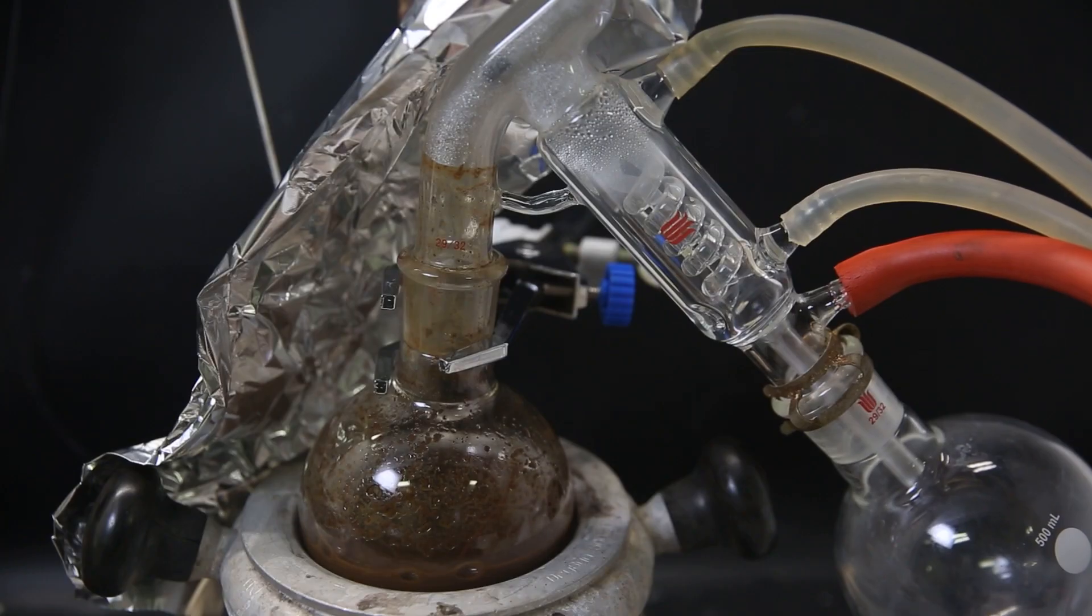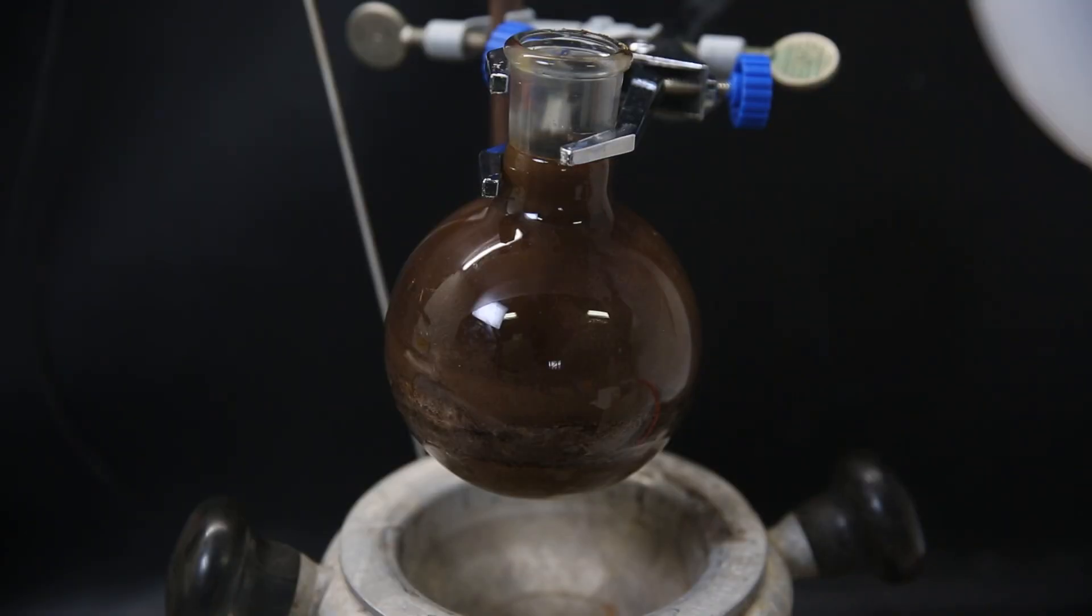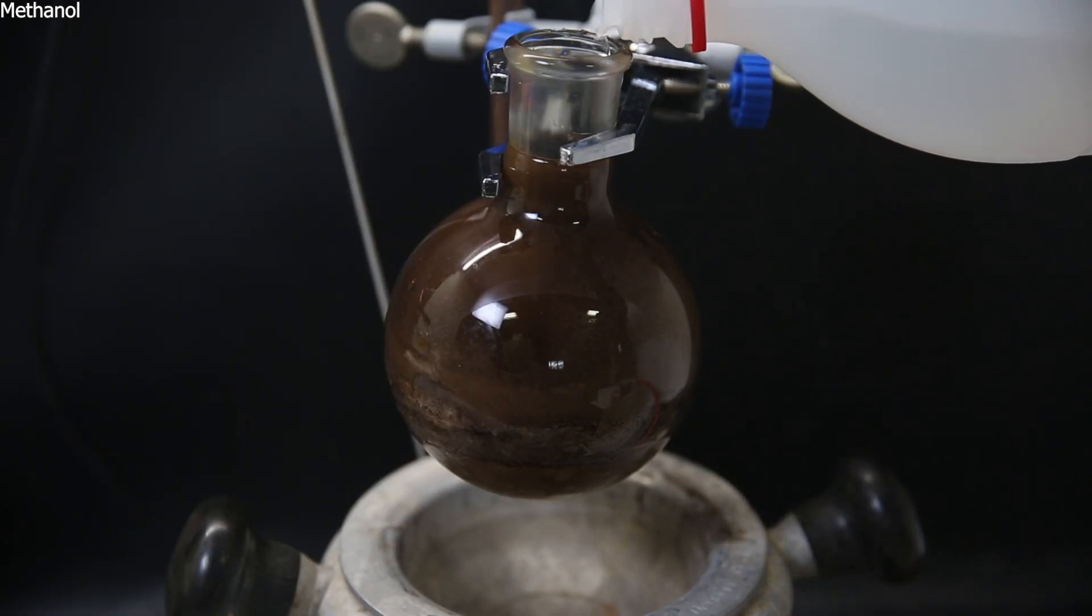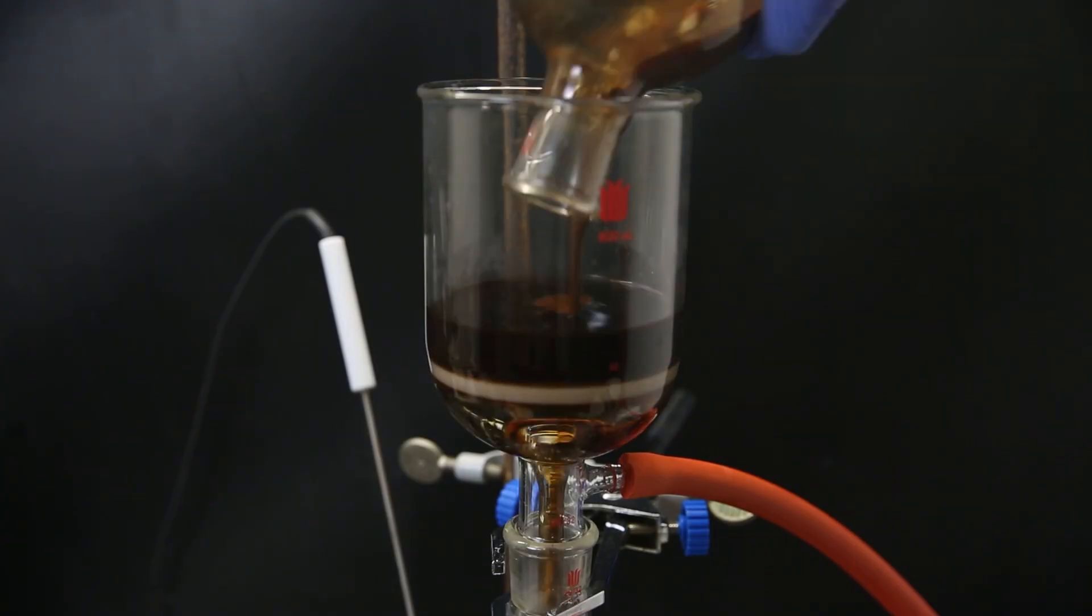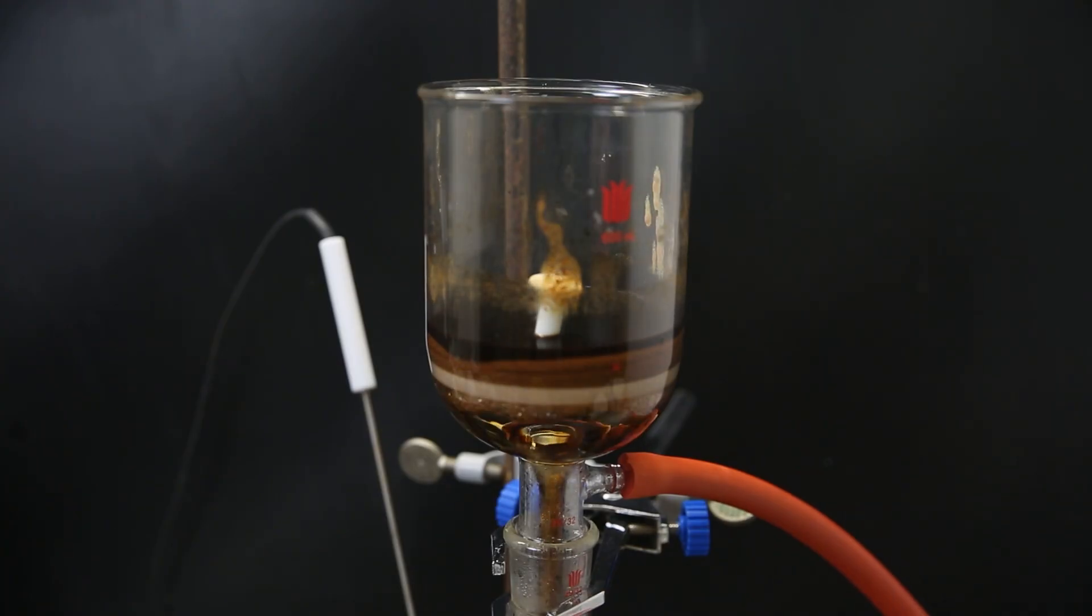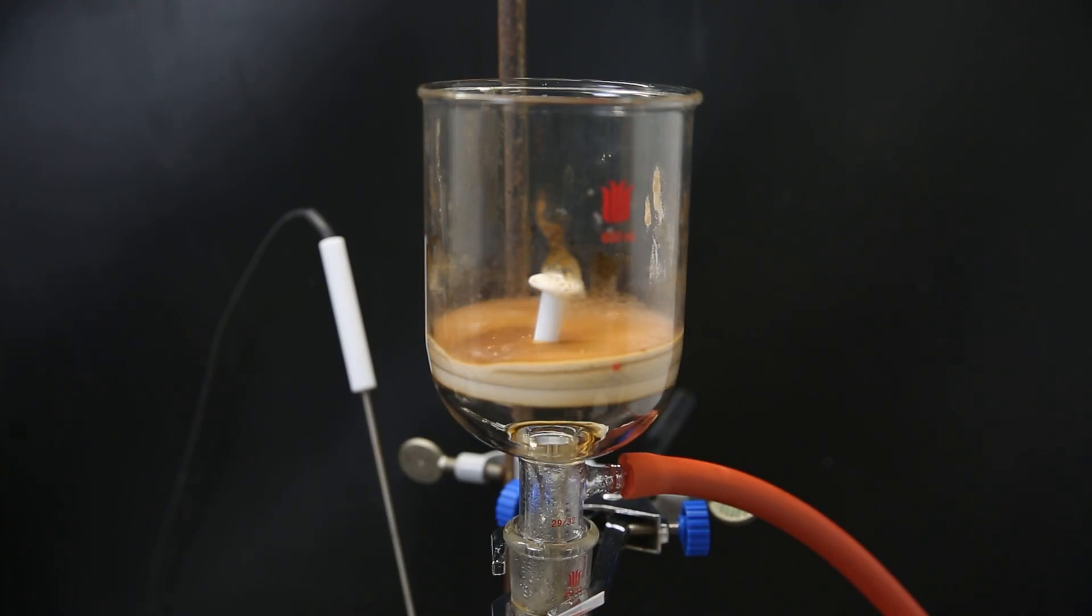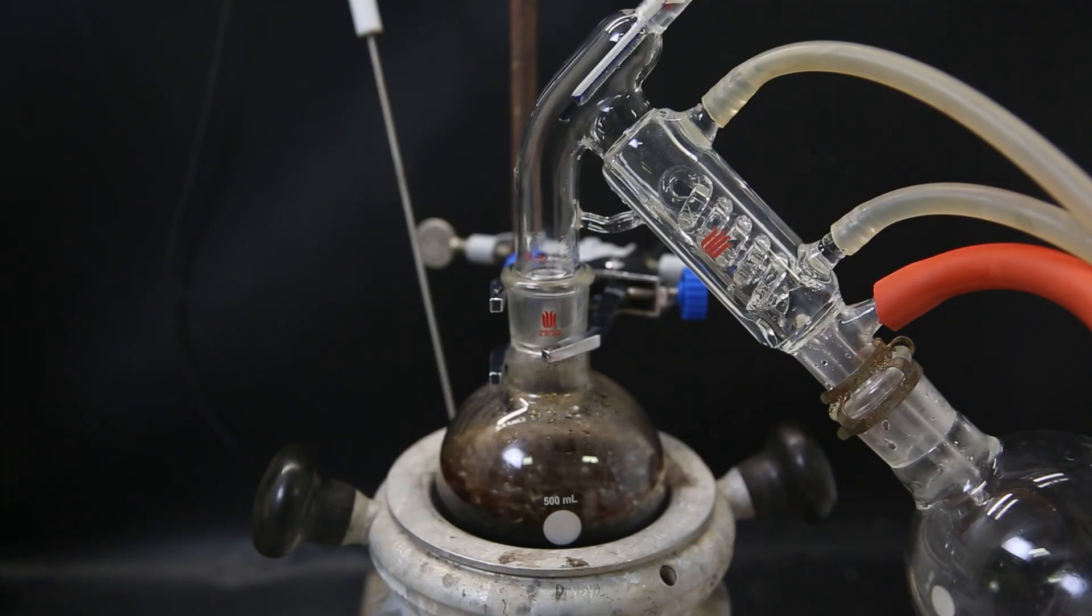I then distill off most of the water and I am left with a dark solid. I add a bunch of methanol to take up the product, while most of the salts will be insoluble. I shake it strongly to get everything to come loose. I then filter it all through a glass frit. I wash it out and down with more methanol, and we see a lot of salts are left behind on the filter.